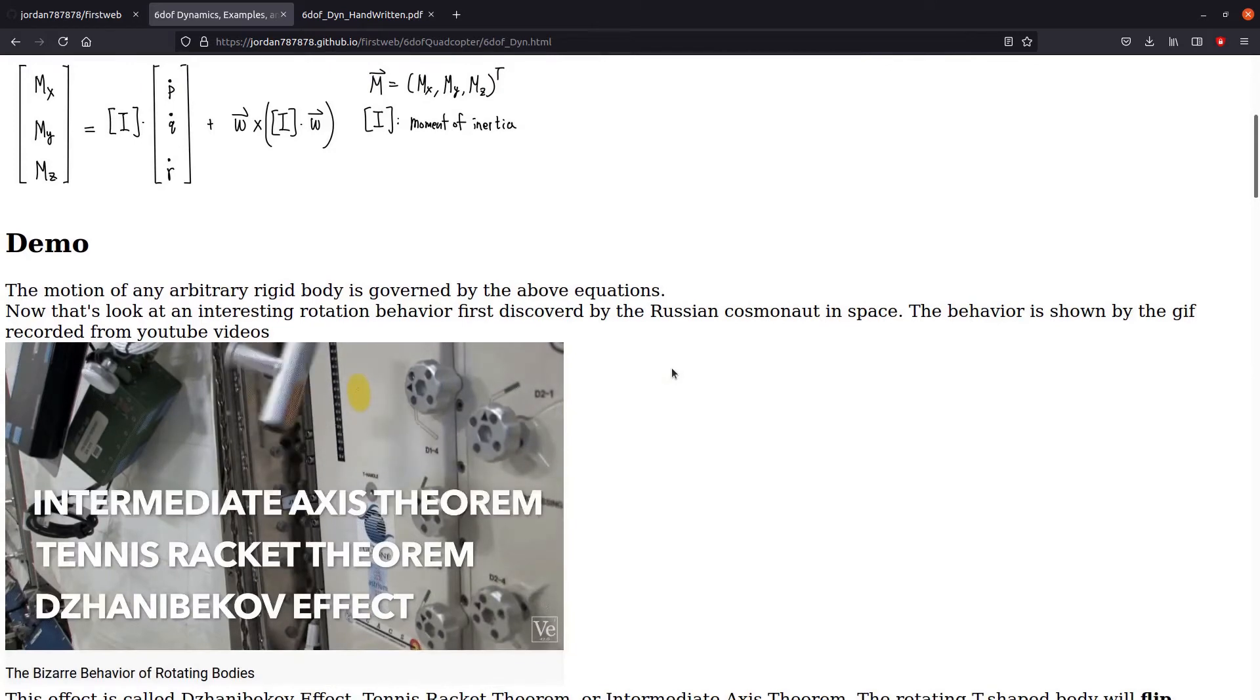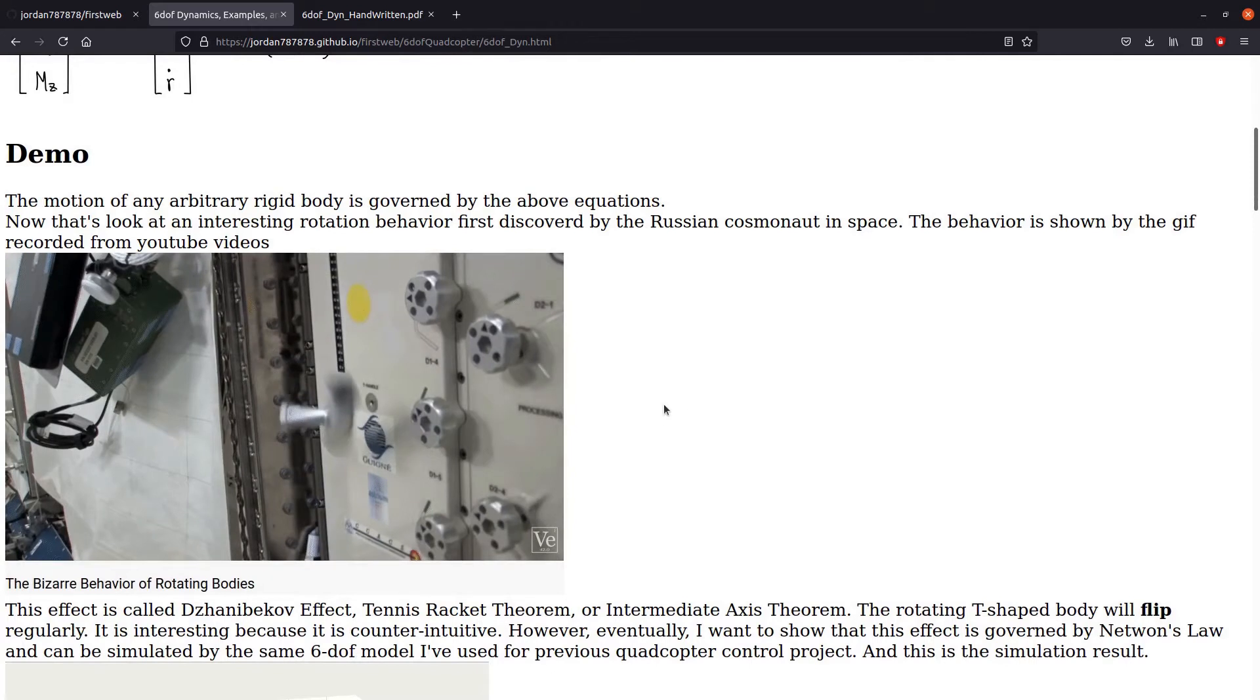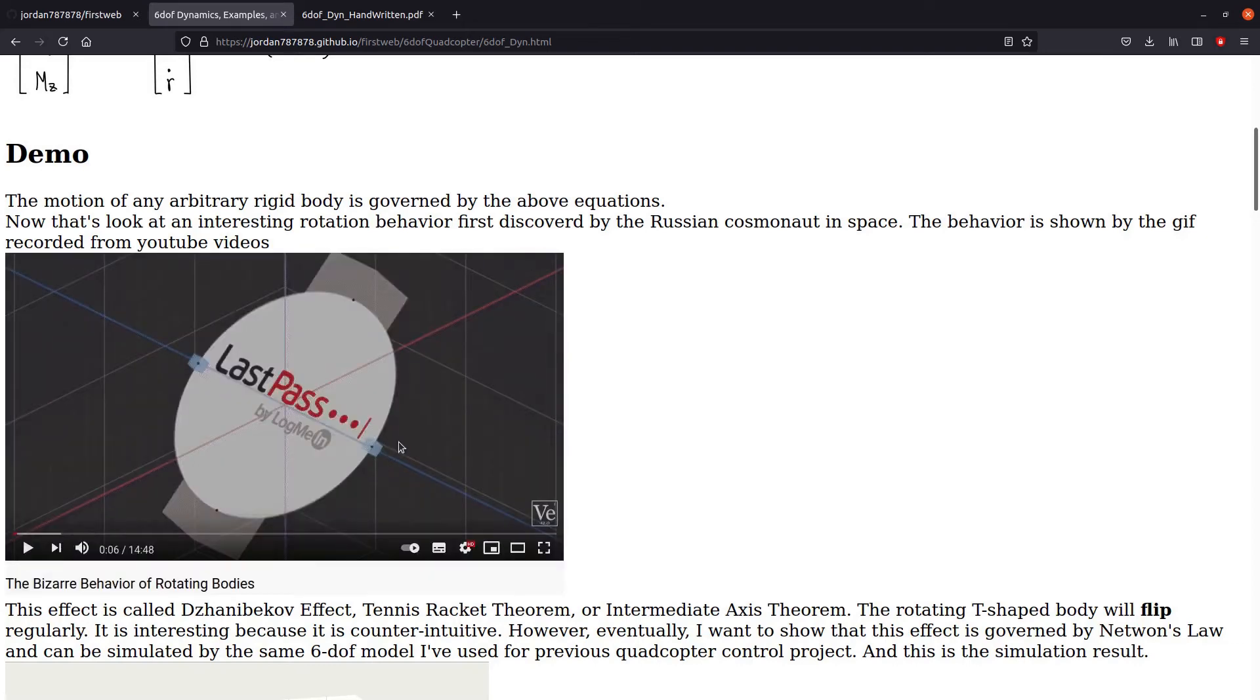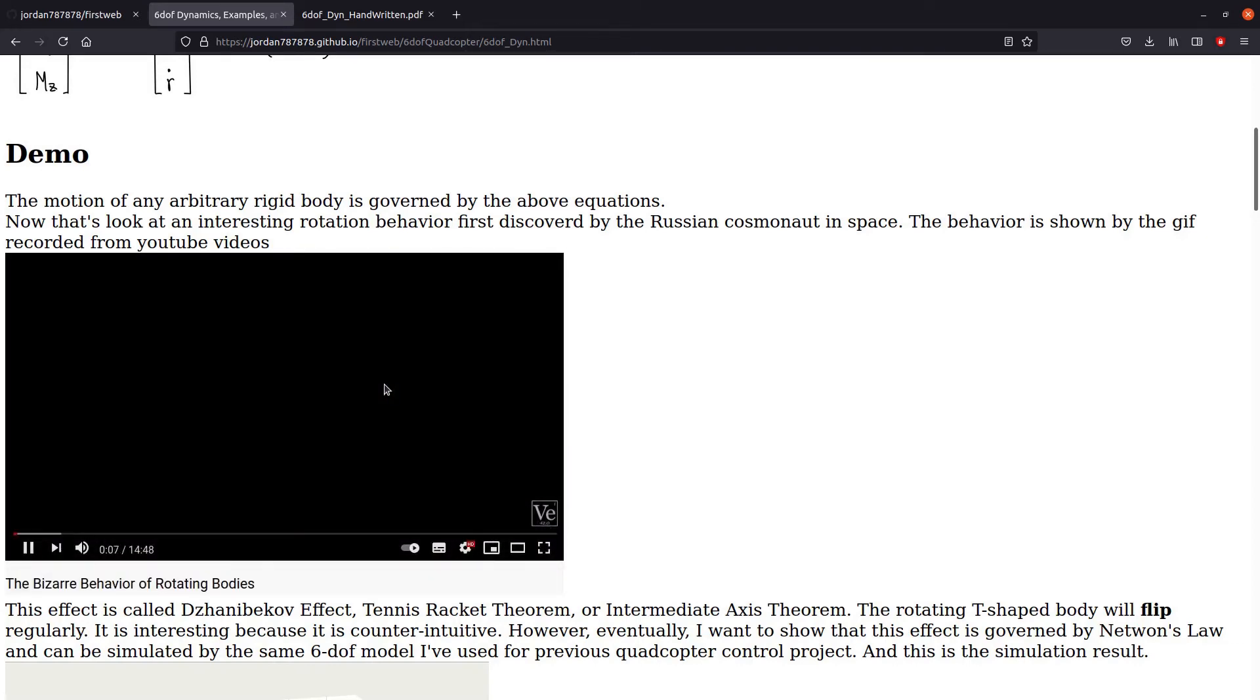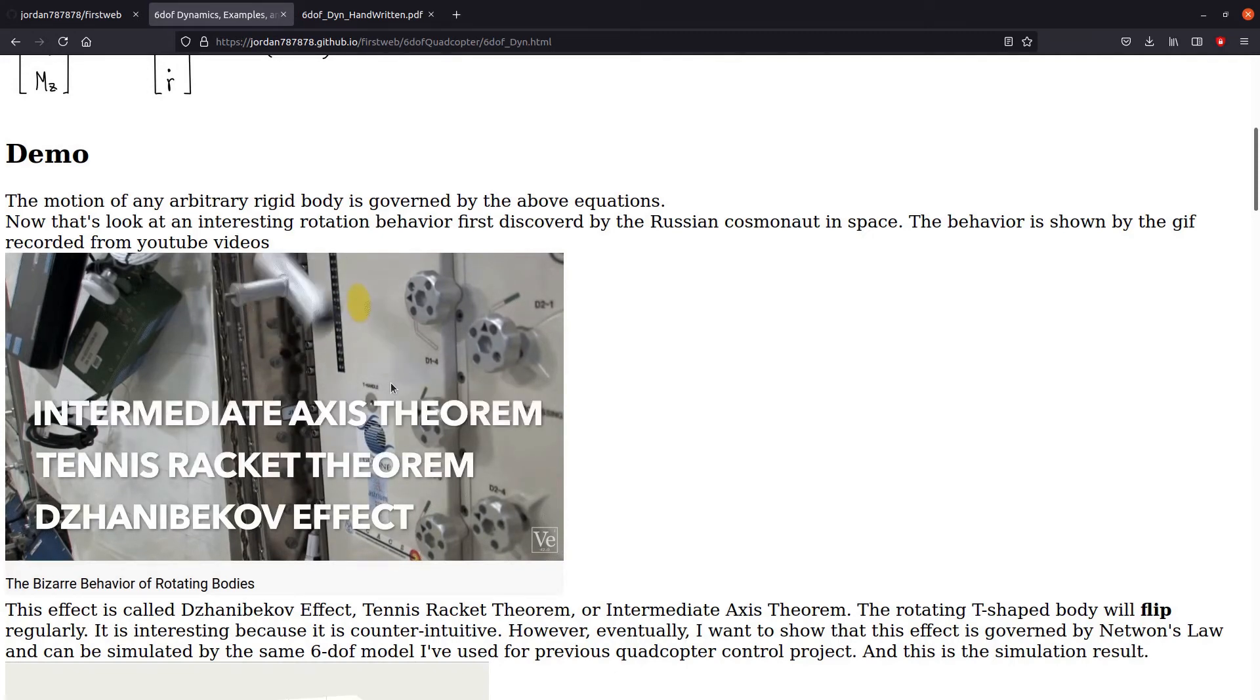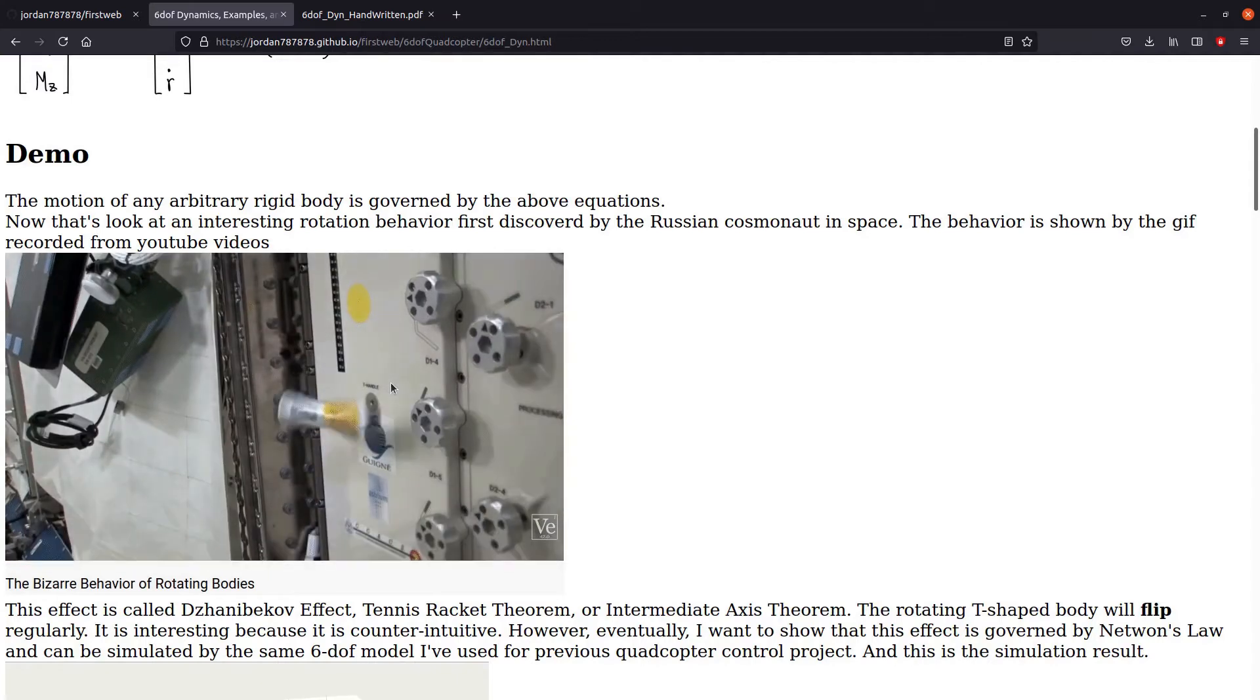Without further ado, let's look at the very interesting Dzhanibekov effect. So see, the T object seems to flip its head while it is rotating. This is a phenomenon first discovered by Russian cosmonauts in space and it was kept in secret because of its strange or bizarre behavior.